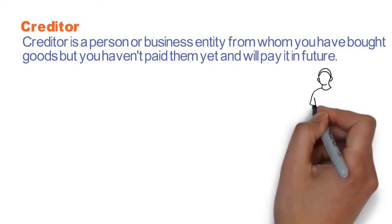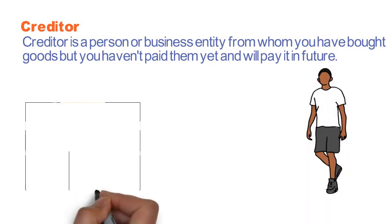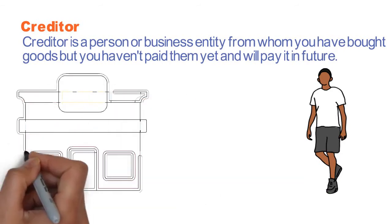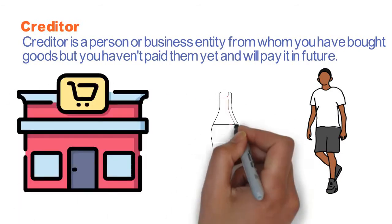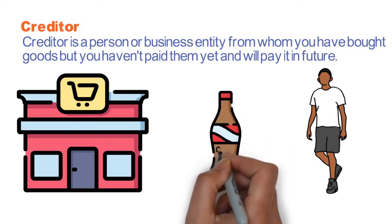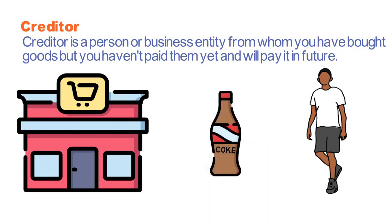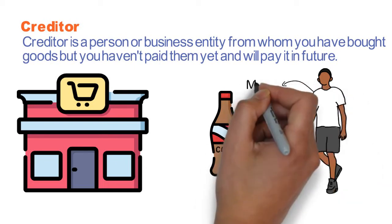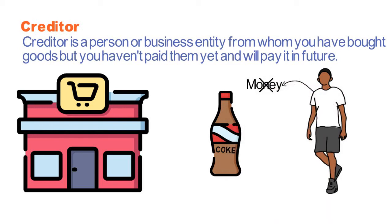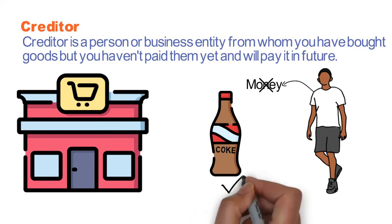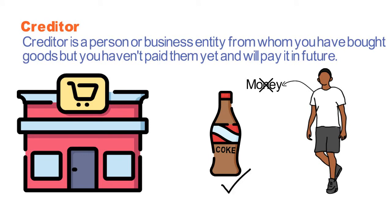Let us understand through an example. When you visit your nearby grocery shop, the shopkeeper knows you very well as you often visit his shop. You say to the shopkeeper, 'Please give me a cold drink, my father will pay it to you at the month end.' He agrees and gives you the cold drink — without you paying the money right then.